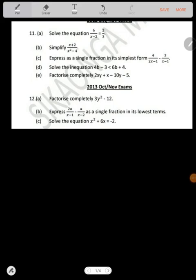I have a question that says solve the equation: 6 over x minus 2 is equal to 2 divided by 3. How can we solve this equation? We always multiply when there is an equal sign like that. So this will be 3 times 6, which is equal to 2 times x minus 2.